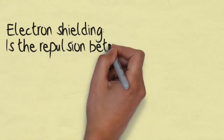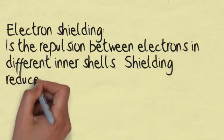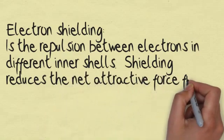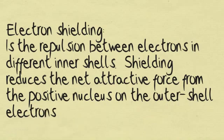Electron shielding. This is the repulsion between electrons in different inner shells. Shielding reduces the net attractive force from the positive nucleus on the outer shell electrons.